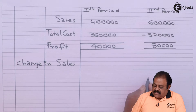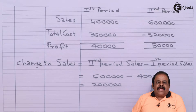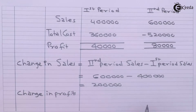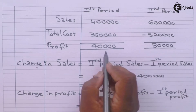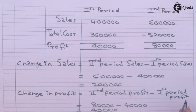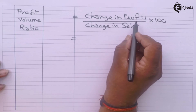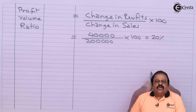Now we find the change in sales: second period sales minus first period sales — six lakhs minus four lakhs — gives a change in sales of two lakhs. Change in profit: eighty thousand minus forty thousand equals forty thousand. Using the PV ratio formula — change in profits divided by change in sales multiplied by 100 — we get a PV ratio of twenty percent.